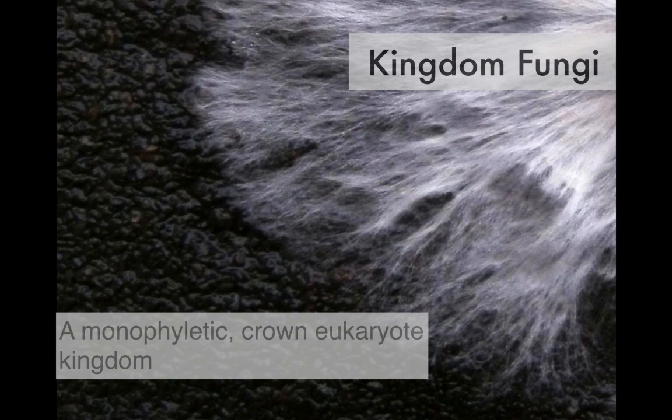Here we begin our discussion of the kingdom Fungi. Fungi represent a monophyletic crown eukaryote kingdom, and the crown eukaryotes are plants, animals, and fungi. As far as kingdoms go, these three kingdoms really are what were originally intended as kingdoms, and which best fit our idea of what a kingdom should be.